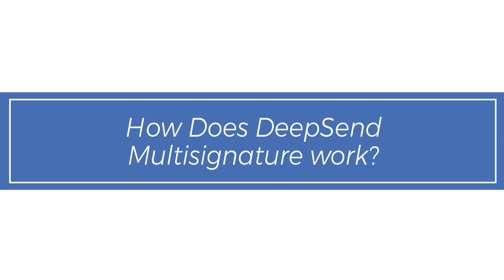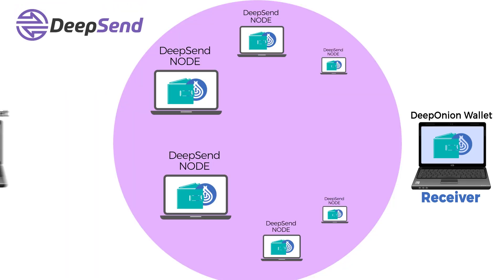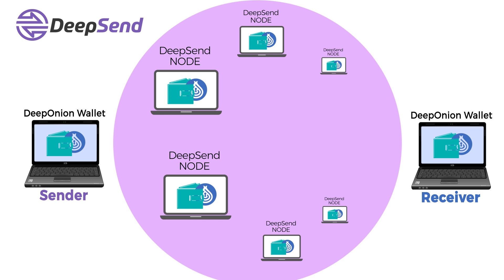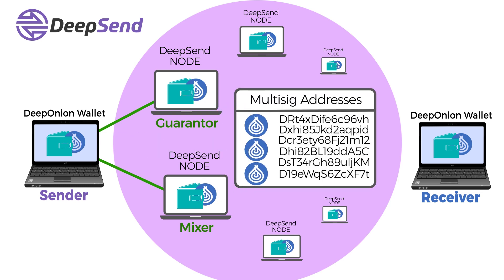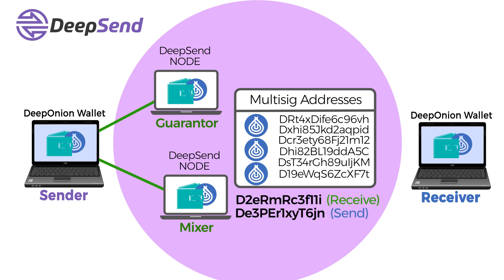How does DeepSend multi-signature work? The sender wallet will randomly select two DeepSend nodes. One node will act as a mixer and the other node will act as a guarantor. All three parties will start by placing a security deposit in a collection of multi-sig addresses that can only be unlocked if two parties agree. The mixer must have two public addresses — one address to receive the payment from the sender, and the other address to send the payment. This way the payment cannot be linked to the address of the original sender.